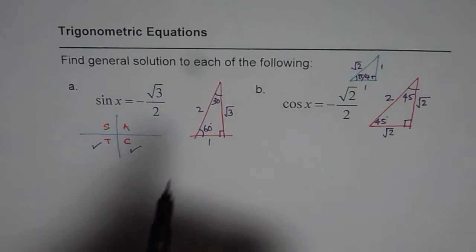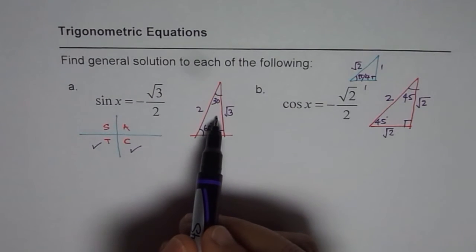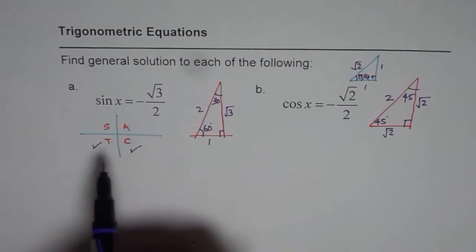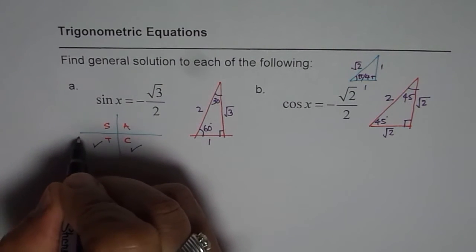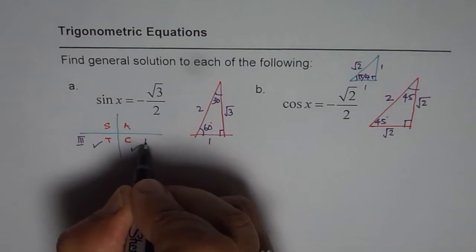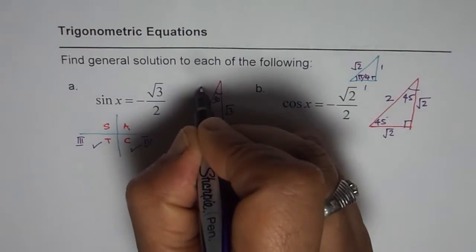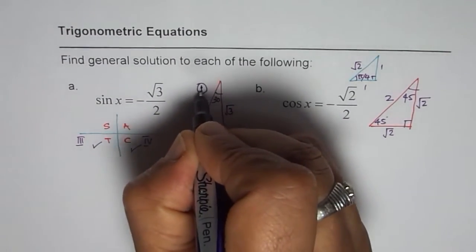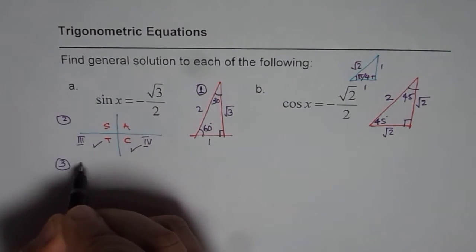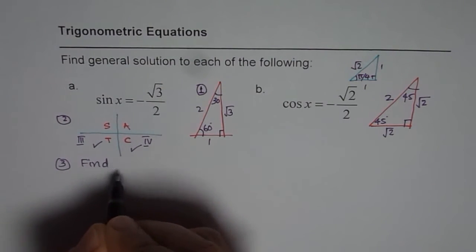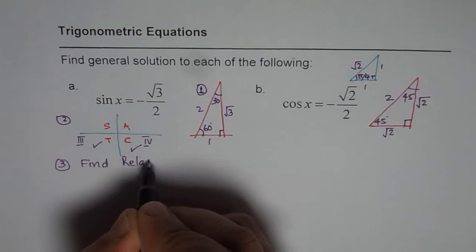Strategy here is, first, always make a special triangle. That is the first step. Second step is figure out which quadrant we are looking for. So in this case, it is quadrant 3 and quadrant 4. And step number 3 is find related acute angle.